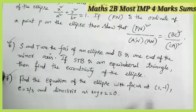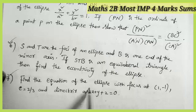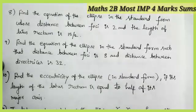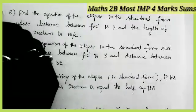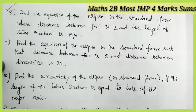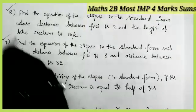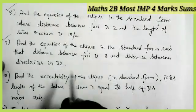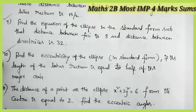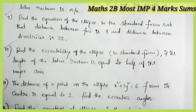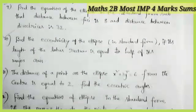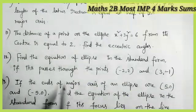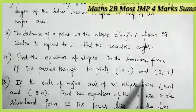Find the equation of the ellipse when the focus, eccentricity, and directrix are given — most important model. Find the equation of the ellipse in standard form whose distance between foci is 2 and length of latus rectum is 15 by 2 — important model. Find the equation of the ellipse in standard form such that the distance between foci equals 8 and distance between directrices equals 32 — important model. Find the eccentricity of the ellipse if the length of the latus rectum equals half of its major axis — important model. Find the distance of a point on the ellipse equal to 2, then find the eccentric angles. Find the equation of the ellipse in standard form if it passes through the given points — important model.